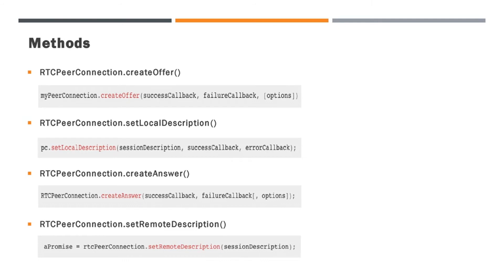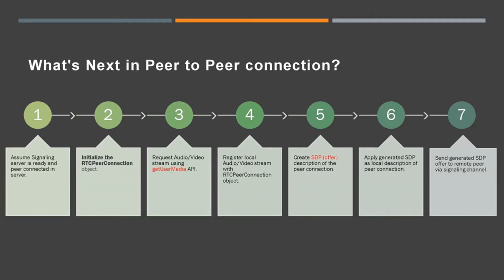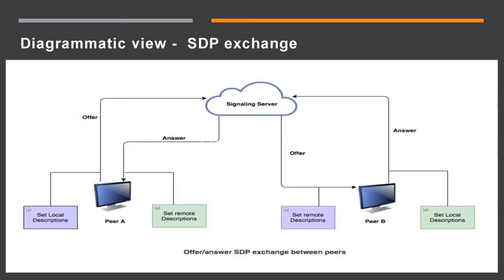Now let us see the syntax of createOffer, setLocalDescription, createAnswer, and setRemoteDescription methods. The RTC peer-connection object is required to use these functions. You can see the step-by-step process of WebRTC SDP and a diagrammatic view of the SDP process. In this diagram, the shared signaling server is used to exchange SDP messages across peer users. Initially, createOffer creates an offer and sets it as the local description, then sends it to the signaling server, which forwards it to the peer. The peer accepts the offer, sets it as its remote description, creates an answer, and sends it back through the signaling server. Finally, the local user sets the remote description.